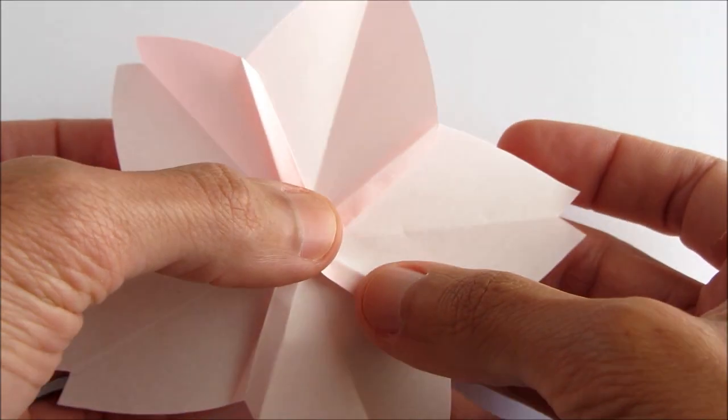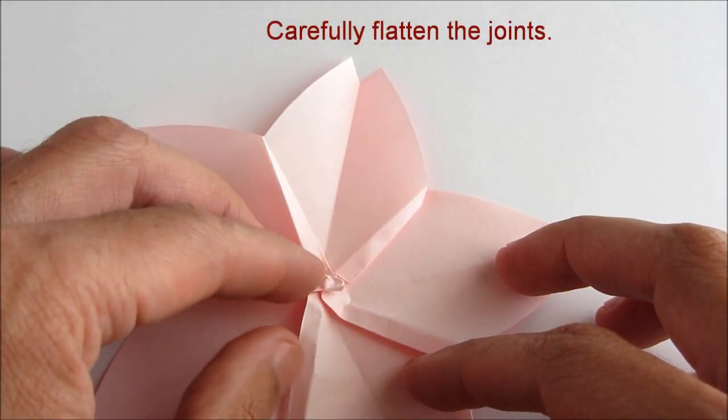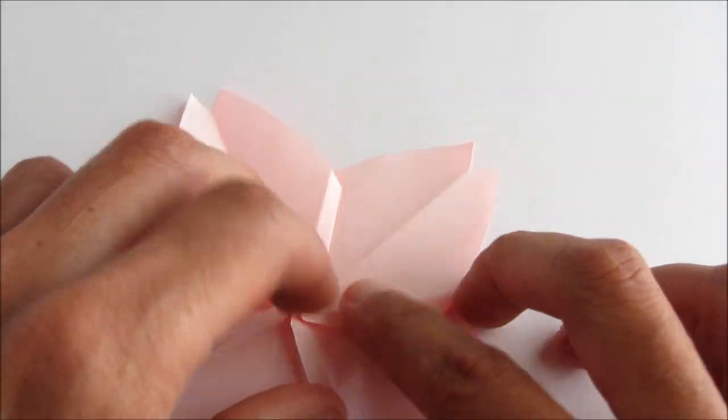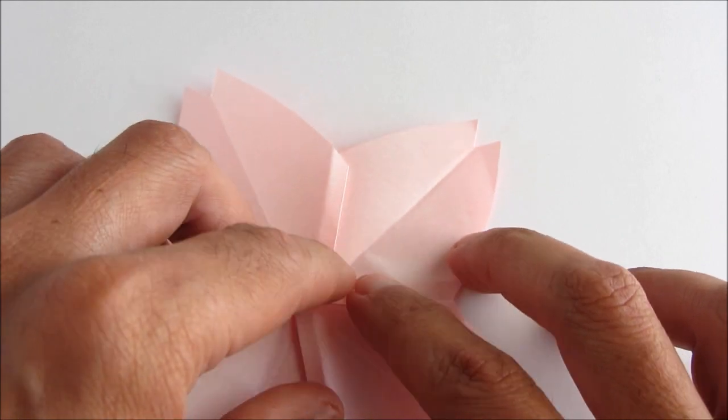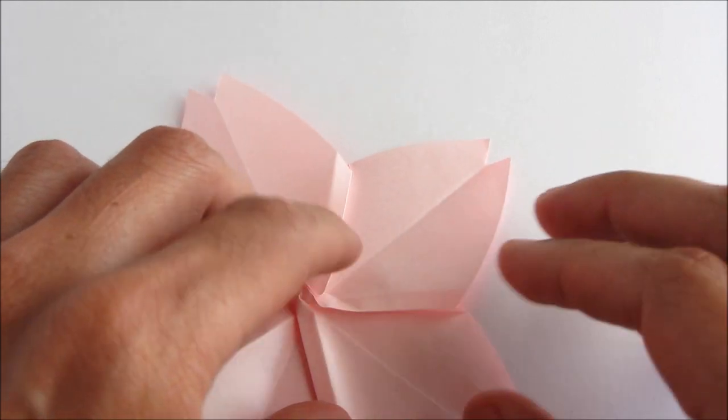So open and flatten the cherry blossom. Now go around the piece and crease all those overlapping joints. Make sure they're flat.